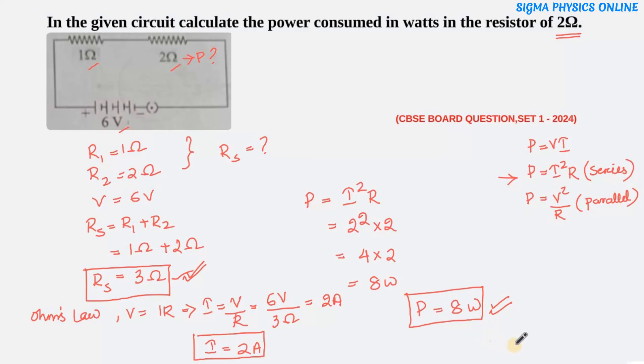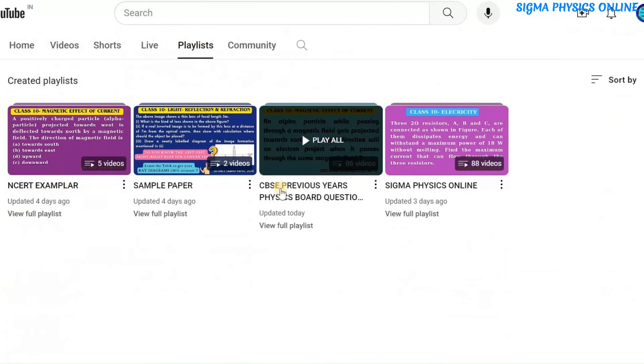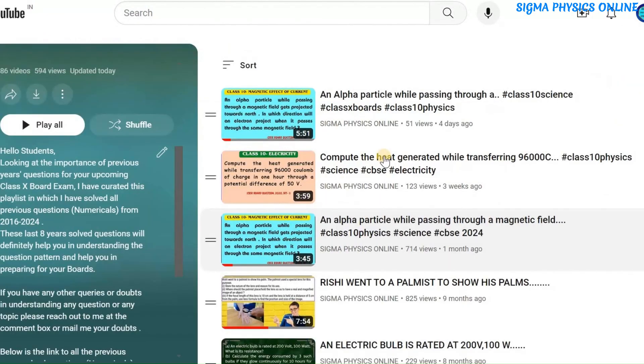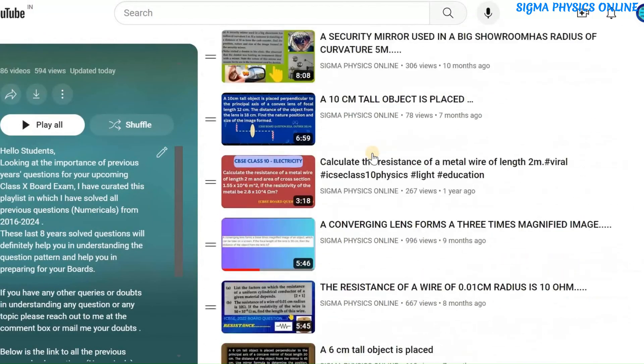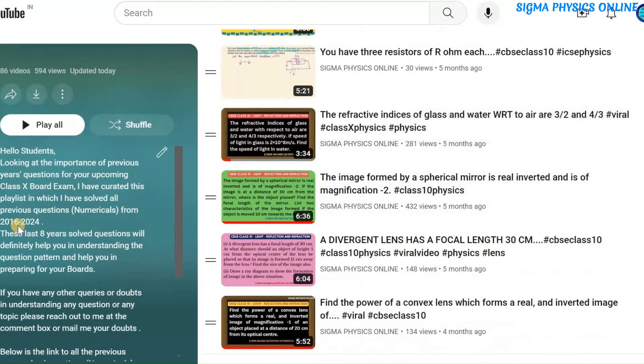The answer is the power consumed by the 2 ohm resistor is 8 watt. If you liked the video, please give it a thumbs up, share it with your friends, and subscribe to the channel. Please watch the playlist containing solved physics questions from previous board exams. The link is in the description box.